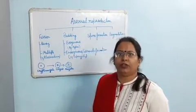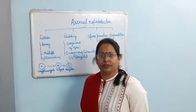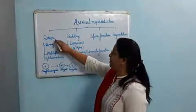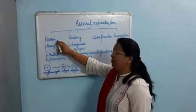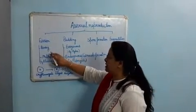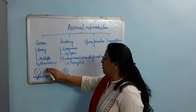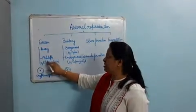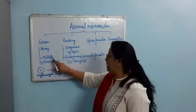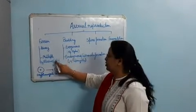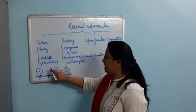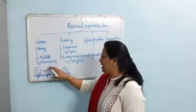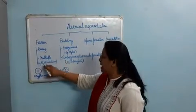Welcome to the fourth session of biology. In the third session we discussed different types of fission modes of asexual reproduction, including binary fission in detail. Today we will start with multiple fission, another mode of asexual reproduction. Multiple means many — a single cell divides into many pieces and gives rise to many cells; that is multiple fission.